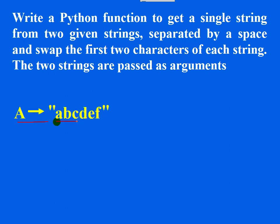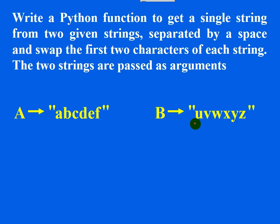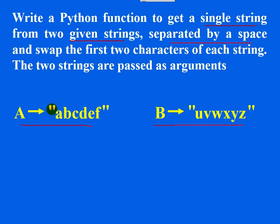You are provided with two strings. A is pointing to the string ABCDEF and B is pointing to the string UVWXYZ. From these two strings you need to get a single string. These two strings should be separated by a space in the result.